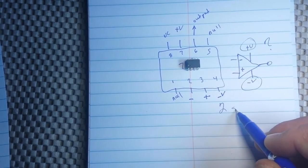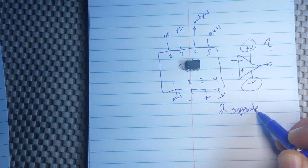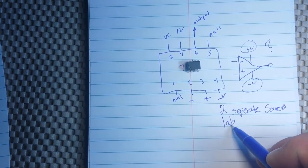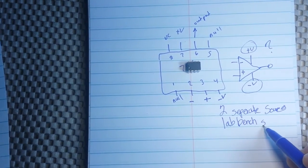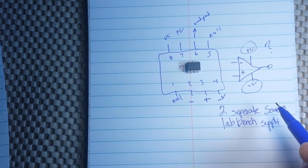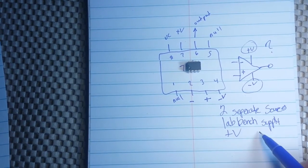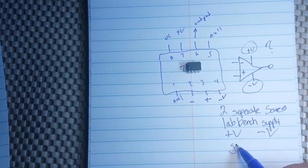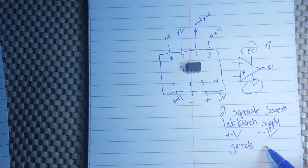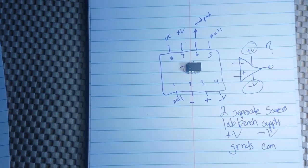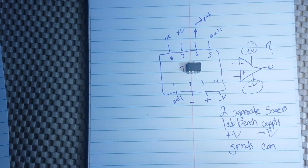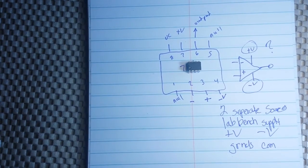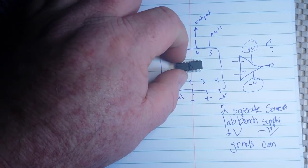Well, you can use two separate sources. So, this is a lab bench supply. And you set one up for positive voltage. You set one up for negative voltage. And, of course, all the grounds are common. What if you don't have two separate lab bench supplies? Well, guess what? You're not screwed.